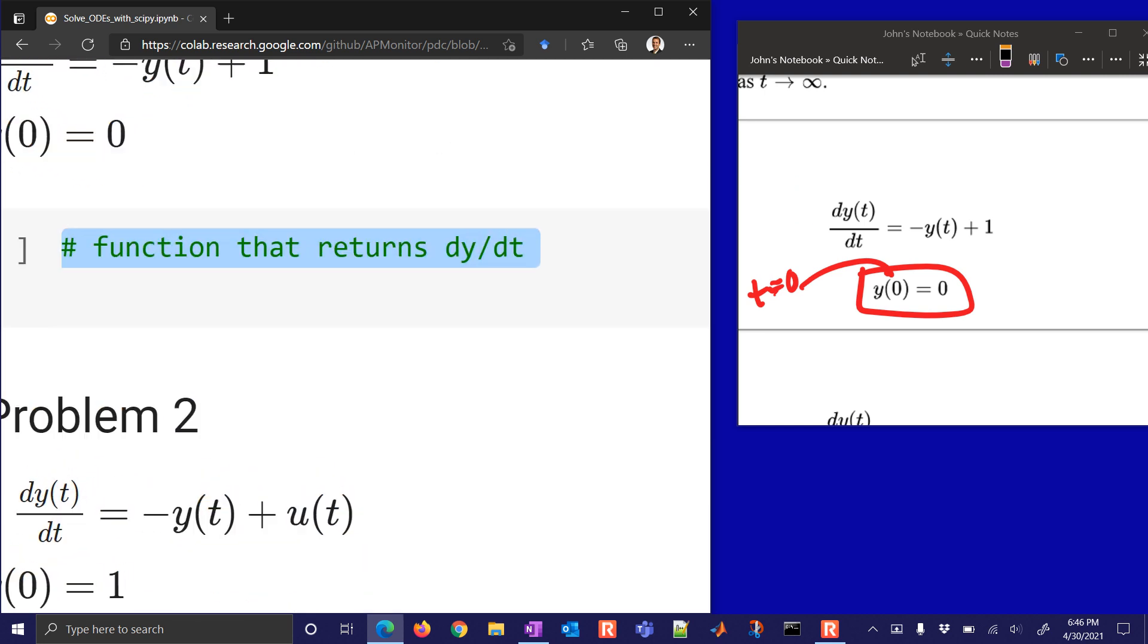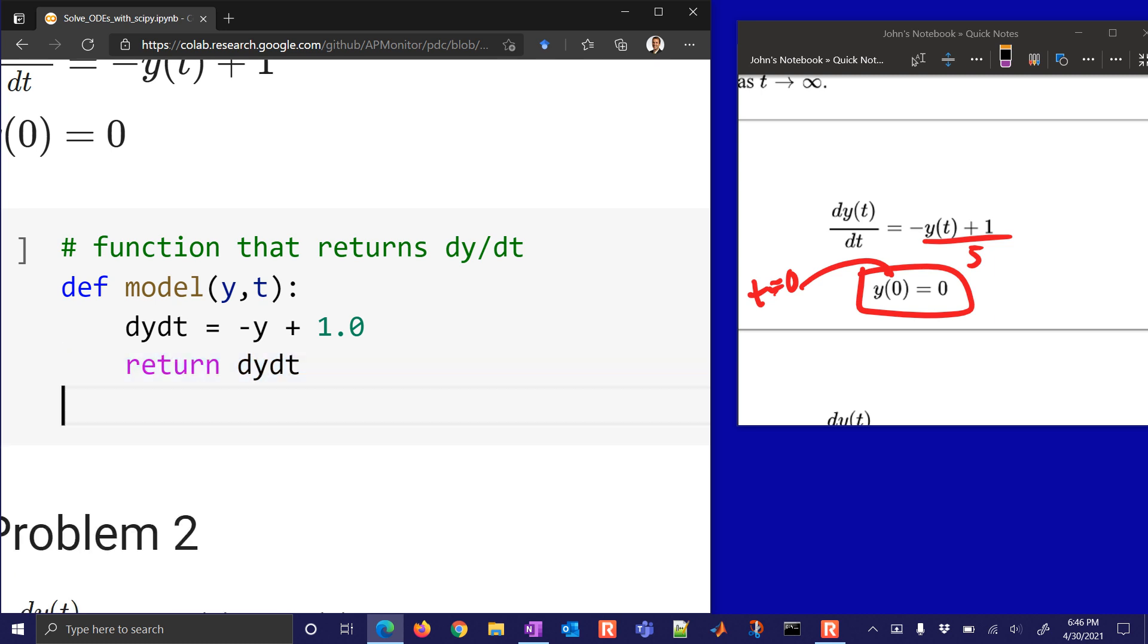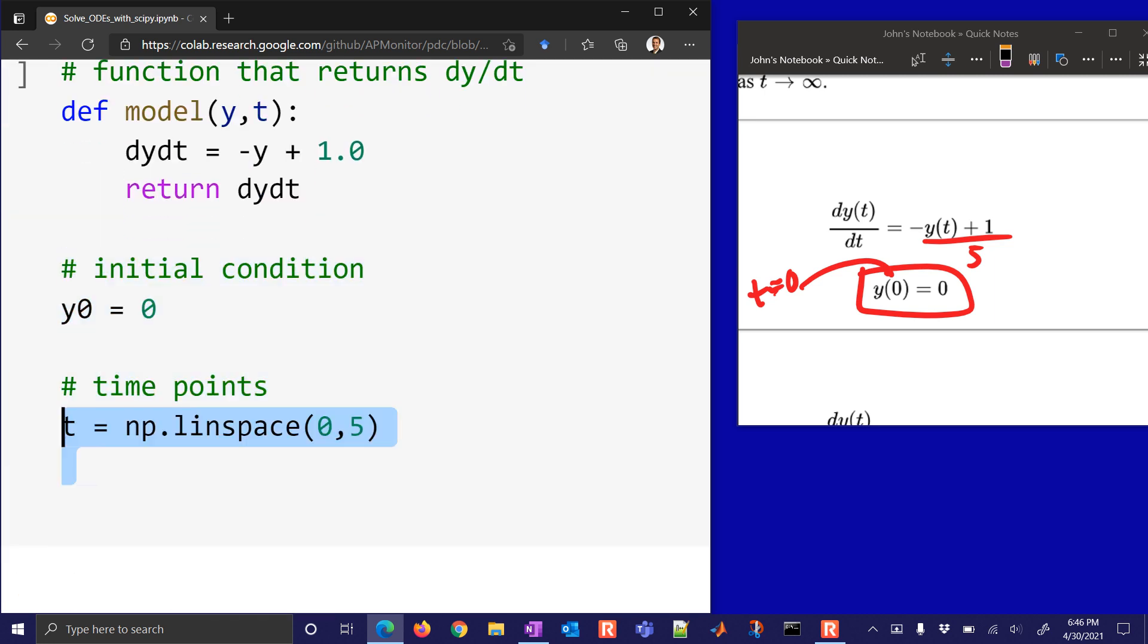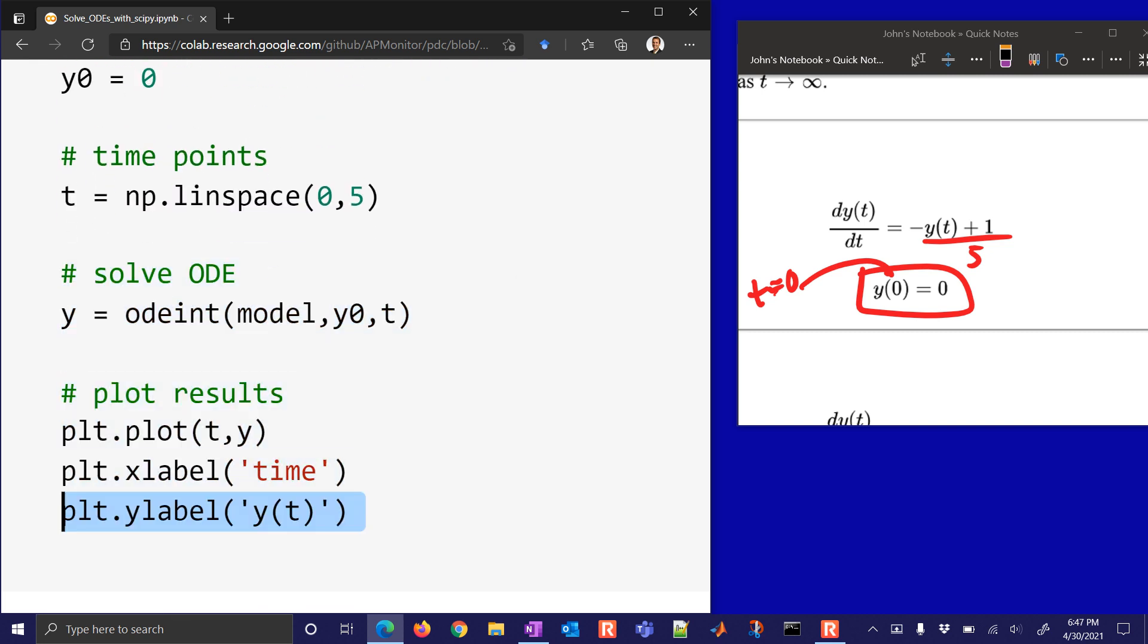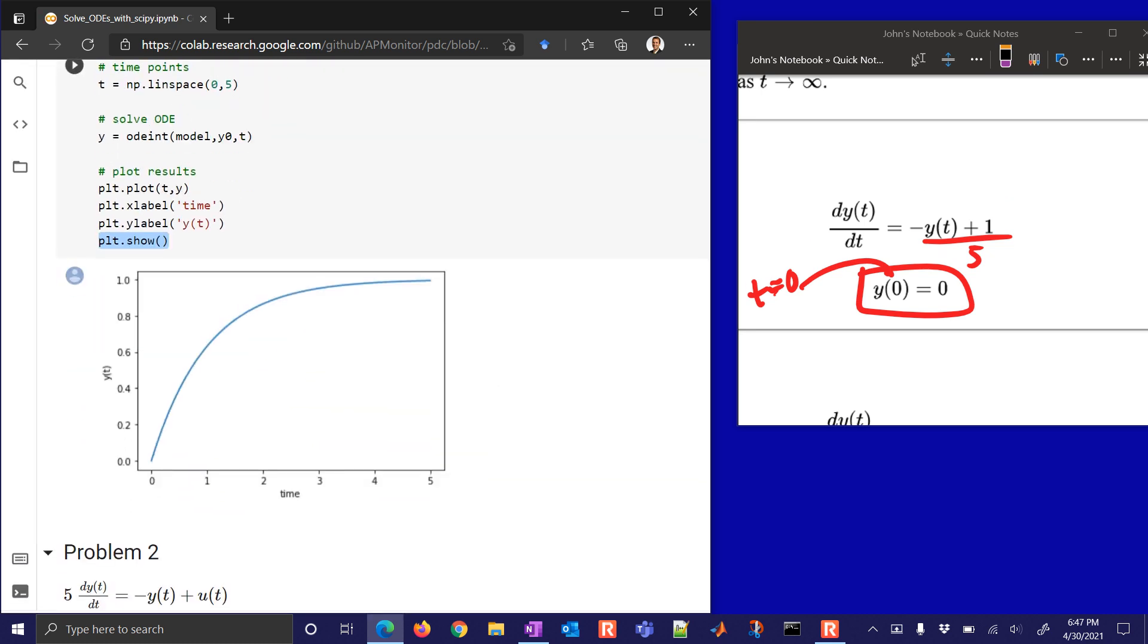First of all, we need our model function. Returns dy/dt. So very similar to the last one. If you have anything on this side, let's say you had a 5 there, you just have to divide it over to just be able to return the derivative value. We don't have that in this case. Let's just keep going. Then we're going to need our initial condition, which is equal to 0. And then time points, and we'll go between 0 and 5, and we'll solve our ODE. And we want to plot the results. So here are the results. You see an exponential decay to a value of 1.